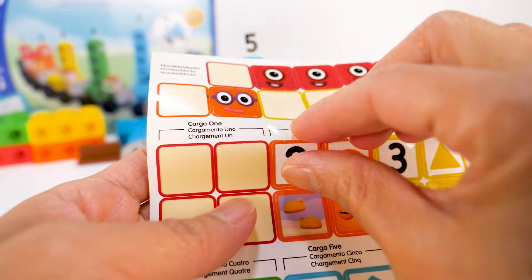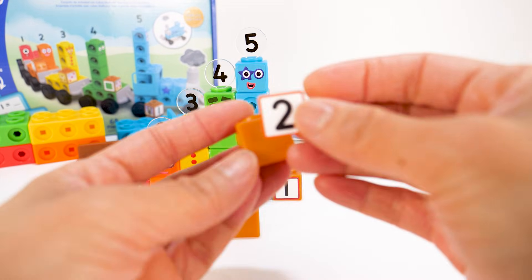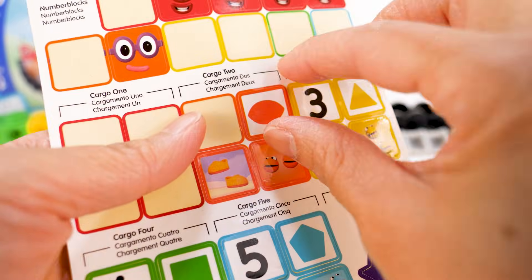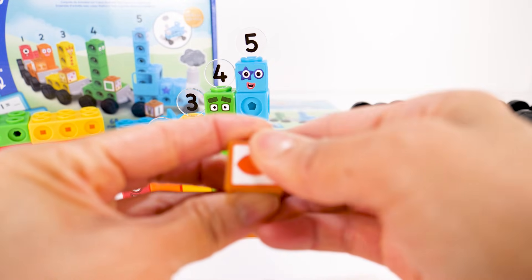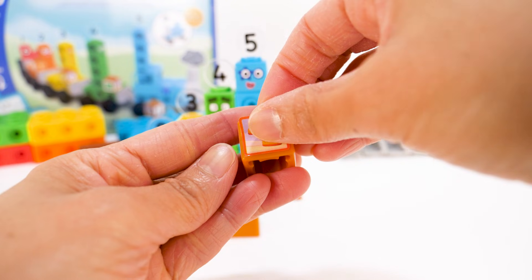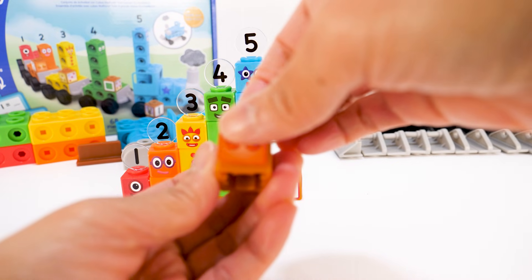Next, we have cargo 2. Cargo 2 has the number 2 on it, a sticker with an orange shape with two sides which looks like a lemon, a pair of shoes, and two orange number blocks.